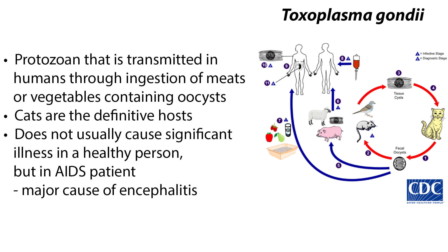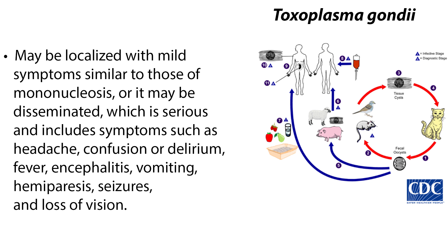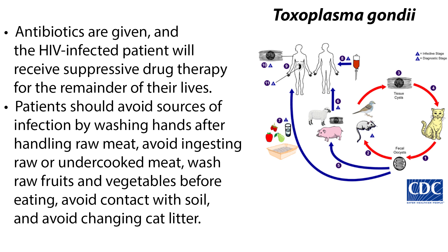Toxoplasma gondii is a protozoan transmitted in humans through ingestion of meats or vegetables containing oocysts. Animals can also be infected, but cats are the definitive hosts. In immunocompromised AIDS patients it is a major cause of encephalitis. The infection may be localized with mild symptoms similar to mononucleosis, or it may be disseminated, which is serious and includes headache, confusion or delirium, fever, encephalitis, vomiting, hemiparesis, seizures, and loss of vision. Antibiotics are given and the HIV-infected patient will receive suppressive drug therapy for the remainder of their lives.